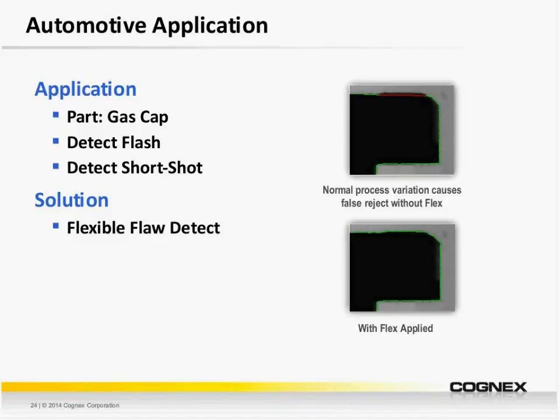This is where Flex helps. We're able to apply a single Flex tool and set the Flex threshold. The top image shows how the valid edge can deviate from the trained image. Without Flex, we might see the edge as misplaced and risk falsely rejecting the part. Flex intuitively accounts for this variation, as you can see from the bottom image.